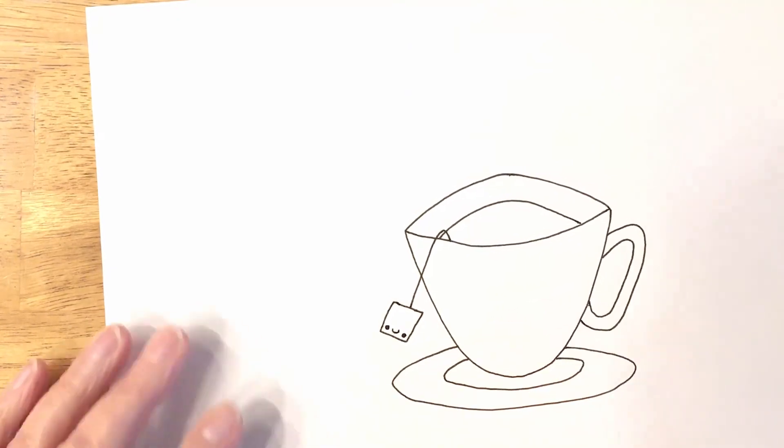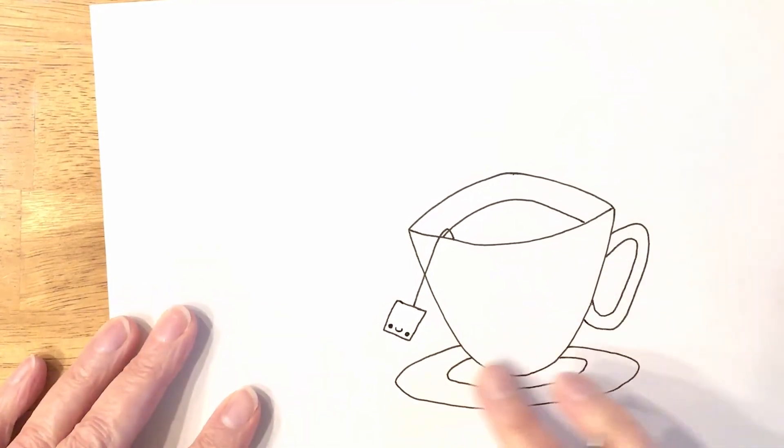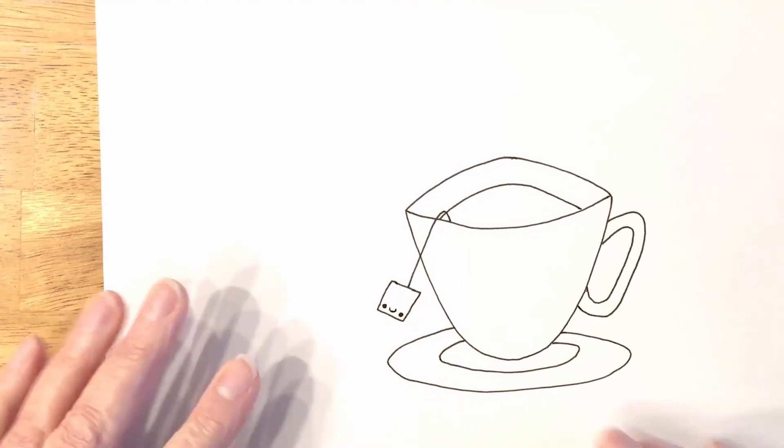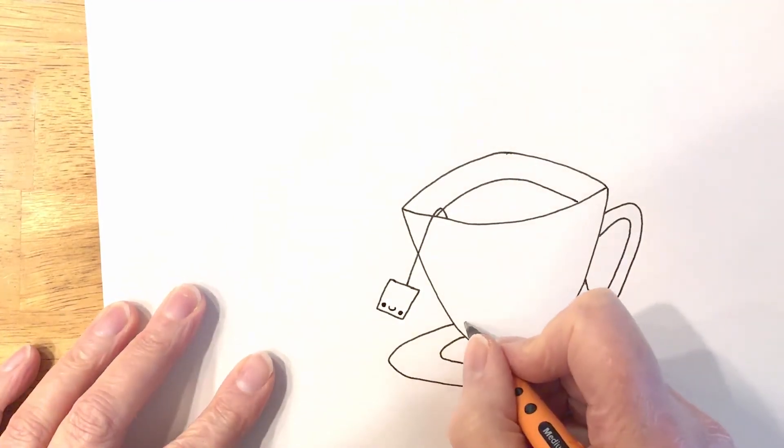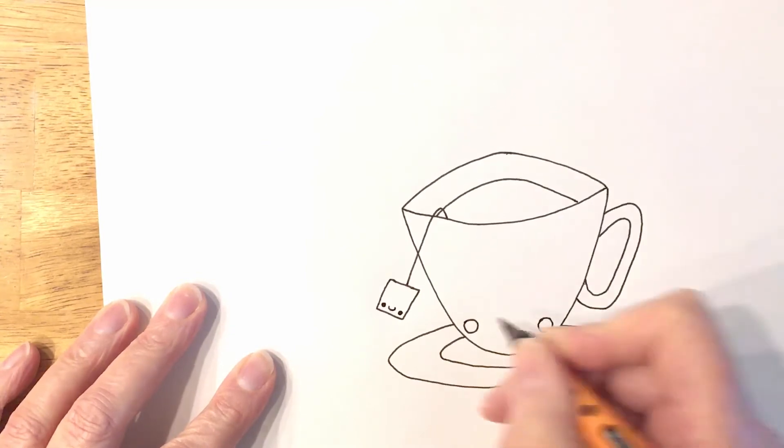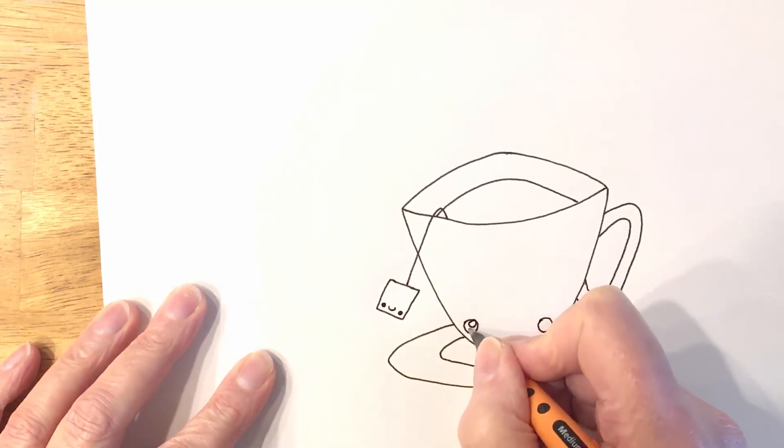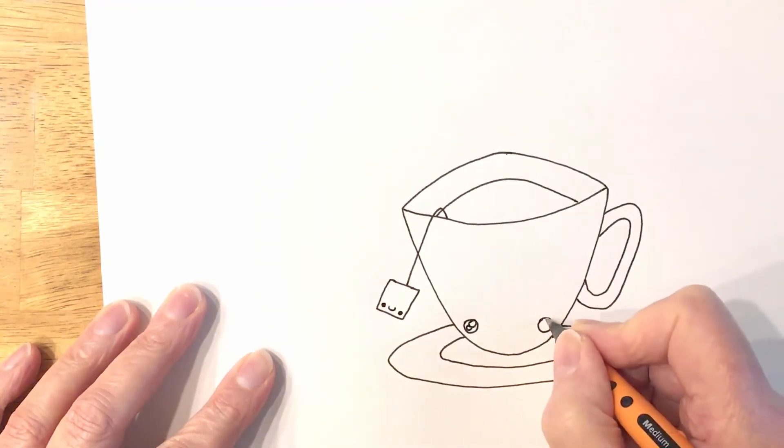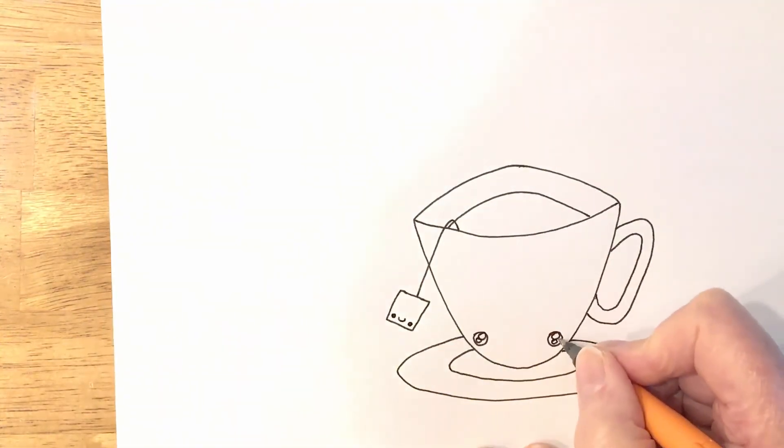And now we're going to put kawaii eyes on the cup itself. Because we've got plenty of room on the cup, I'm going to use slightly more detailed kawaii eyes. So I'm going to draw a bigger circle for the eyes, and then in here two smaller circles. And then we just color in the area outside the circles.